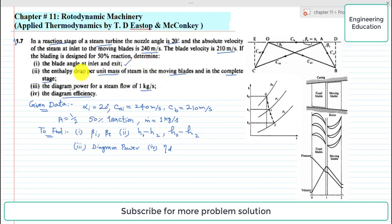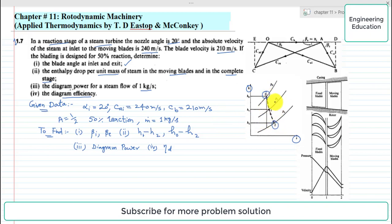We have to find: the blade angles at inlet and exit, beta_i and beta_e; the enthalpy drop per unit mass of steam in the moving blades, H1 minus H2; and for the complete stage, H0 minus H2. We will find both.